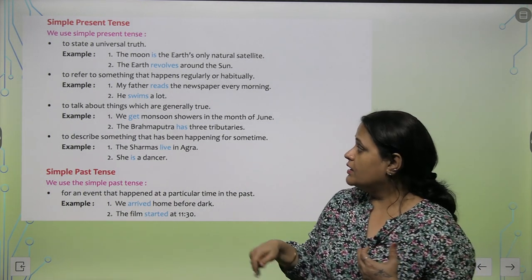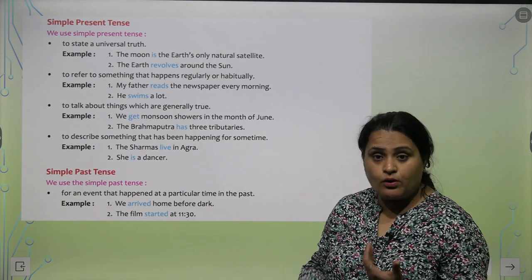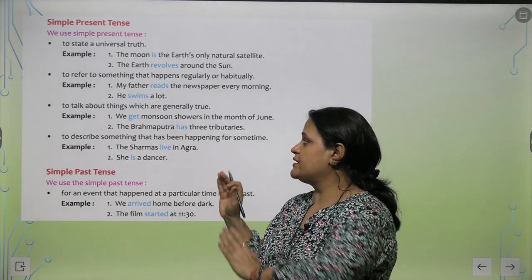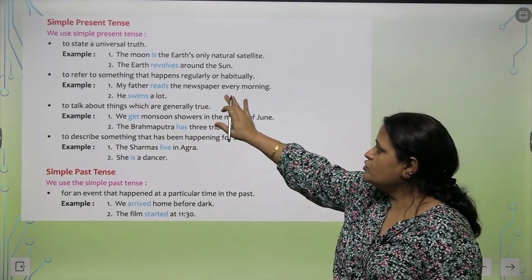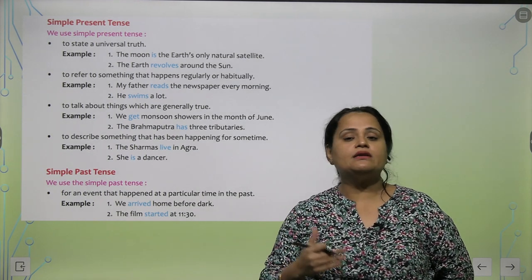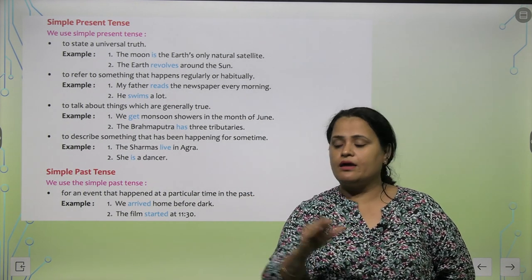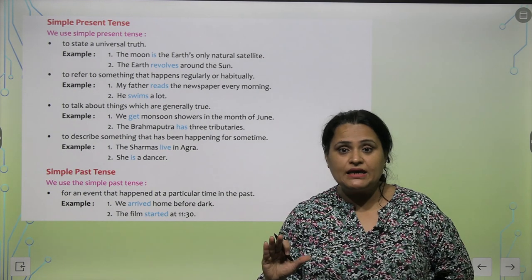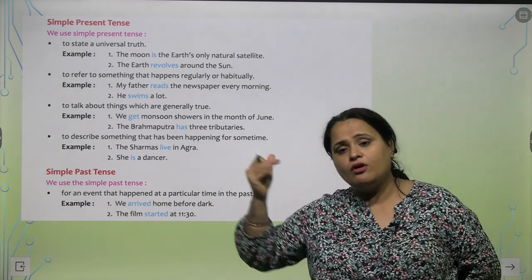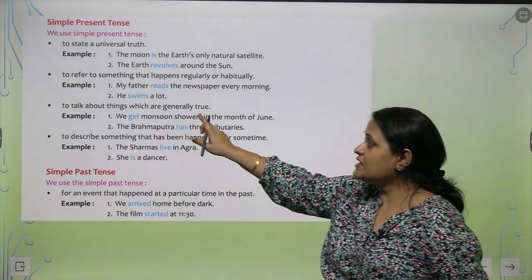Yeh ek universal truth hai. Jab hum kishi ki regular habit, ok? Jab hum kishi ki, ya uske saath jo regular hota hai, usko describe karte hai, tab hum us chiz ko simple present mein describe karte hai. Jaise, 'My father reads the newspaper every morning.' Mere papa her subah newspaper pardte hai — yeh unki habit hai, it is a regular habit. Voh abhi chhuti nahi hai ke voh past ban jaye. Aisa nahi hai ki voh future mein pardhenge ya nahi pardhenge. Lekin abhi tak voh regular pardte raha hai. Yeh bhi aapka aajayega present tense mein.